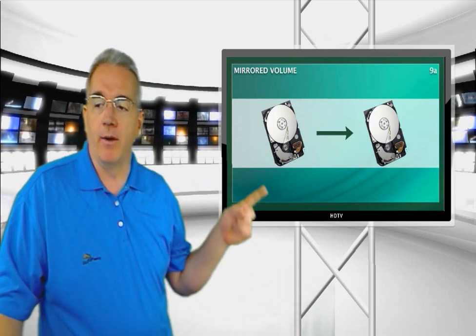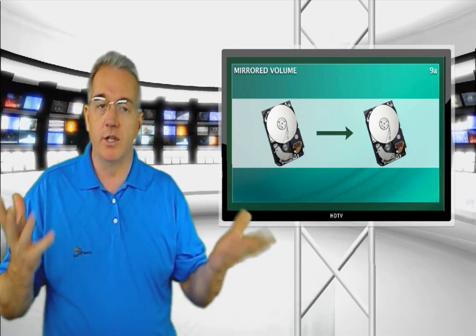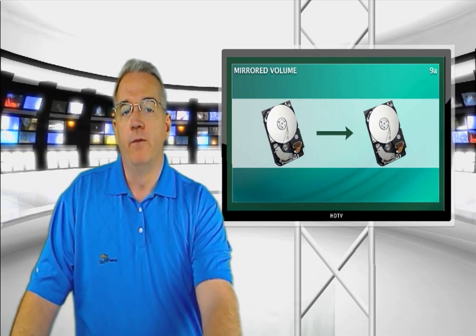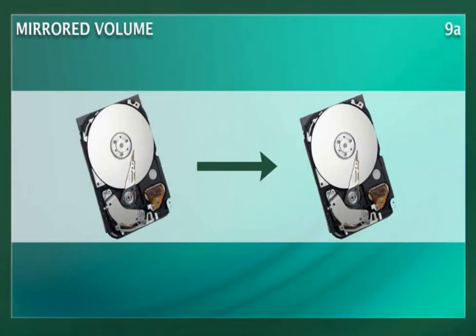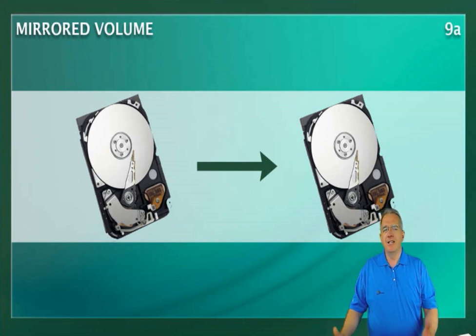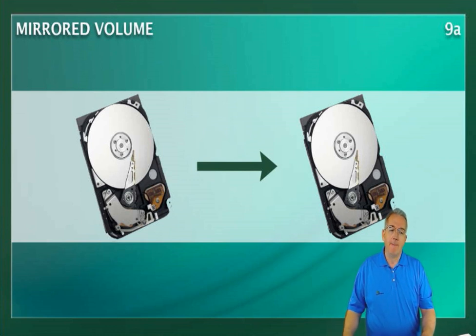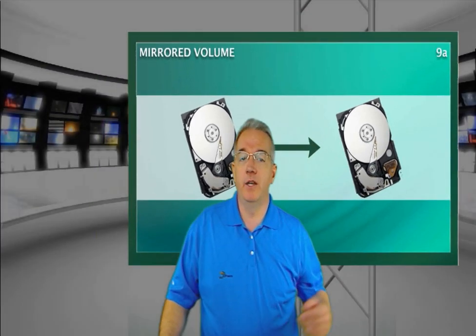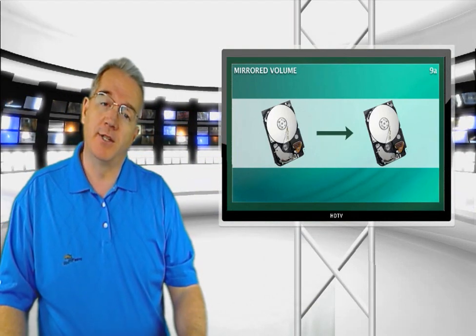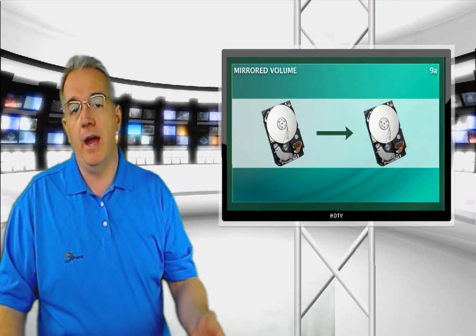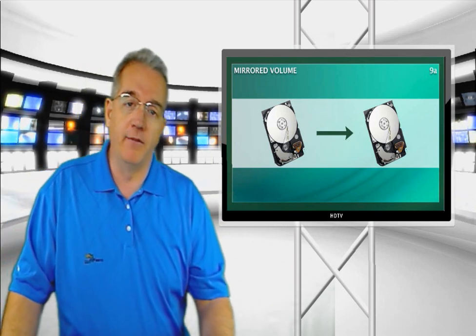The first fault-tolerant option we'll talk about is RAID 1, also known as a mirrored set. Whatever I write to one drive is going to be mirrored to the other drive — the same information on both disks. The advantage is that you can use this form of fault tolerance for your operating system, boot volume, and system volume. It's fairly fast to read since you can read from both drives at the same time, and fairly fast to write. Adding another drive controller gives you disk duplexing, which works even better. However, if you have two one-terabyte drives, you only have one terabyte of usable storage. If one drive goes down, you simply fire up the other drive.